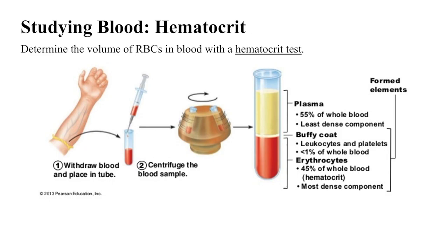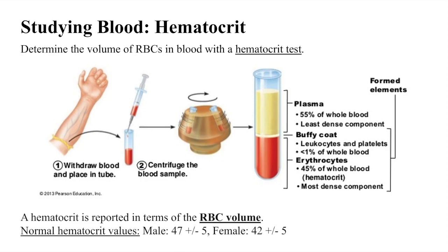By centrifuging a blood sample, you'll separate it into three distinct layers based on density. Plasma, which is the least dense component of blood, will sit on top of the other layers. Red blood cells, the most dense component of blood, will rest at the bottom. Sandwiched between the plasma and red blood cell layers is the thin buffy coat, made up of white blood cells and platelets. White blood cells and platelets make up less than 1% of whole blood. After centrifuging the blood sample, you can use a chart to determine the hematocrit, which is reported in terms of red blood cell volume, with a normal value for males around 47 and females around 42.